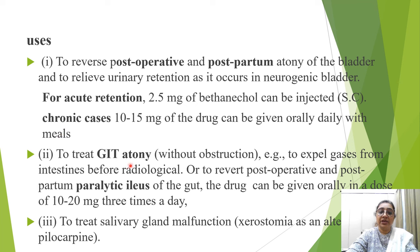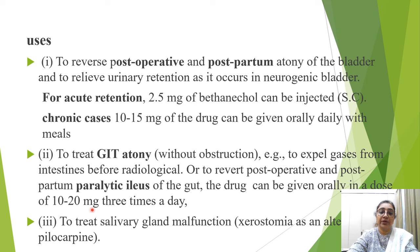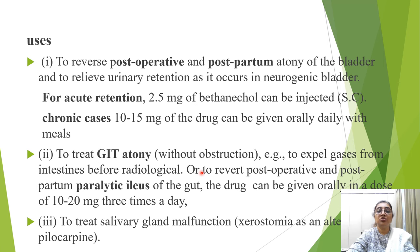For GI atony without obstruction — to expel gases before radiological investigation or to reverse postoperative paralytic ileus — bethanechol can be given orally at 10 to 20 mg three times a day, or to treat salivary gland malfunction like xerostomia. These are the various uses of bethanechol.